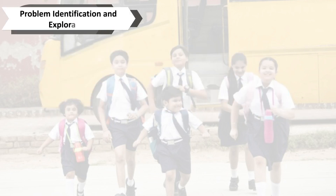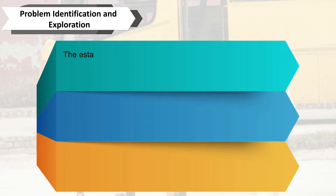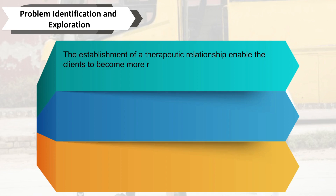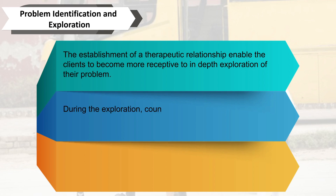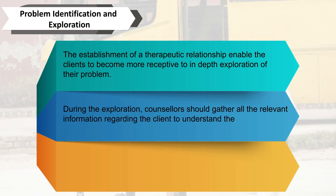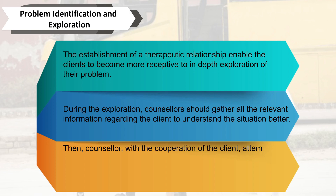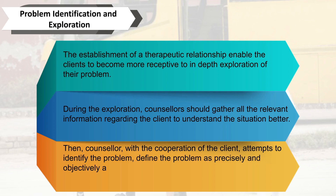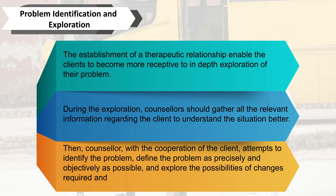Second stage: problem identification and exploration. The establishment of a therapeutic relationship enables the client to become more receptive to an in-depth exploration of their problem. During the exploration, the counselor gathers all relevant information regarding the client to better understand the situation. The counselor then, with the cooperation of the client, attempts to identify and define the problem as precisely and objectively as possible, and explores the possibilities of changes required and obstacles that exist for these changes to materialize.